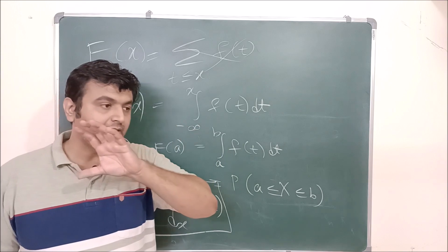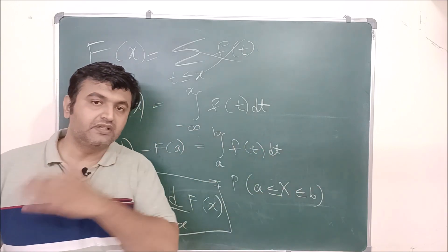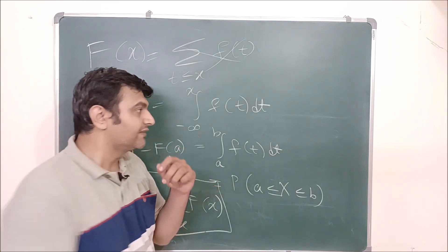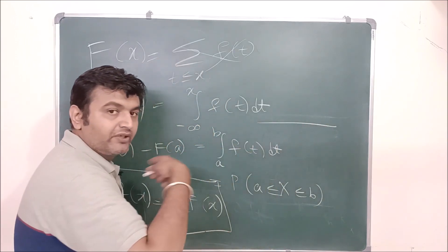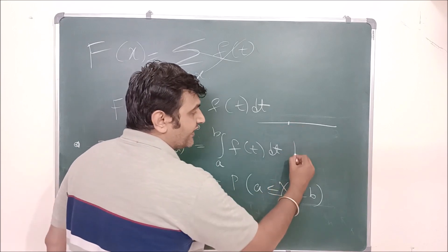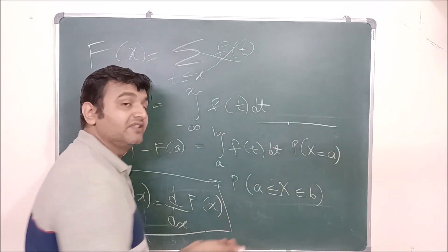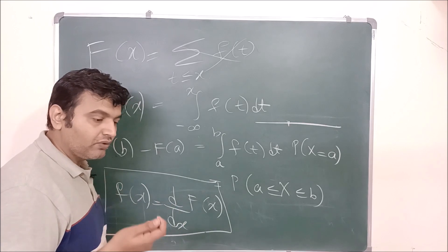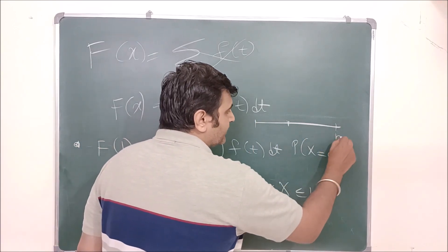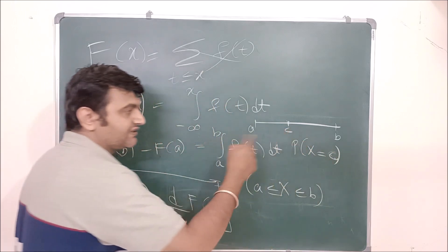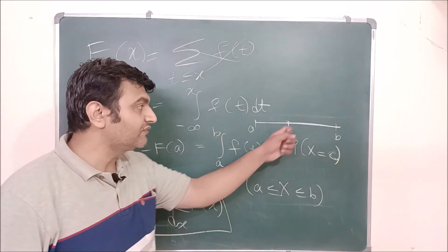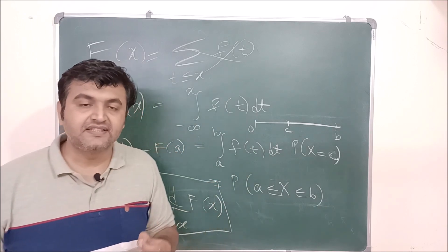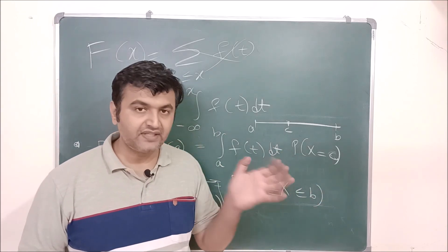Here at each point you can't define a probability. Therefore the probability distribution table we drew in the last lecture can't be done here. If you have a line segment, it is uncountably infinitely many numbers, and the probability that the random variable takes a single value will always be zero. Another way to see it: the length of an interval from A to B is B minus A, but the length of a single point C is always zero. So in the continuous case, the probability at any single point is always zero.